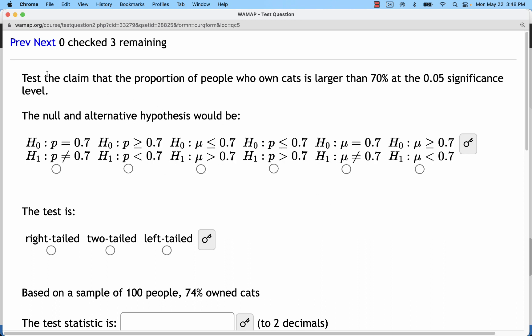In this version, test the claim that the proportion of people who own cats is larger than 70%. We need to look for a greater than 70%. So, if I look through these, I see a greater than or equal to. That's not the same. What I need is just a plain old greater than sign with p greater than 0.7. So, that will be the correct response there.